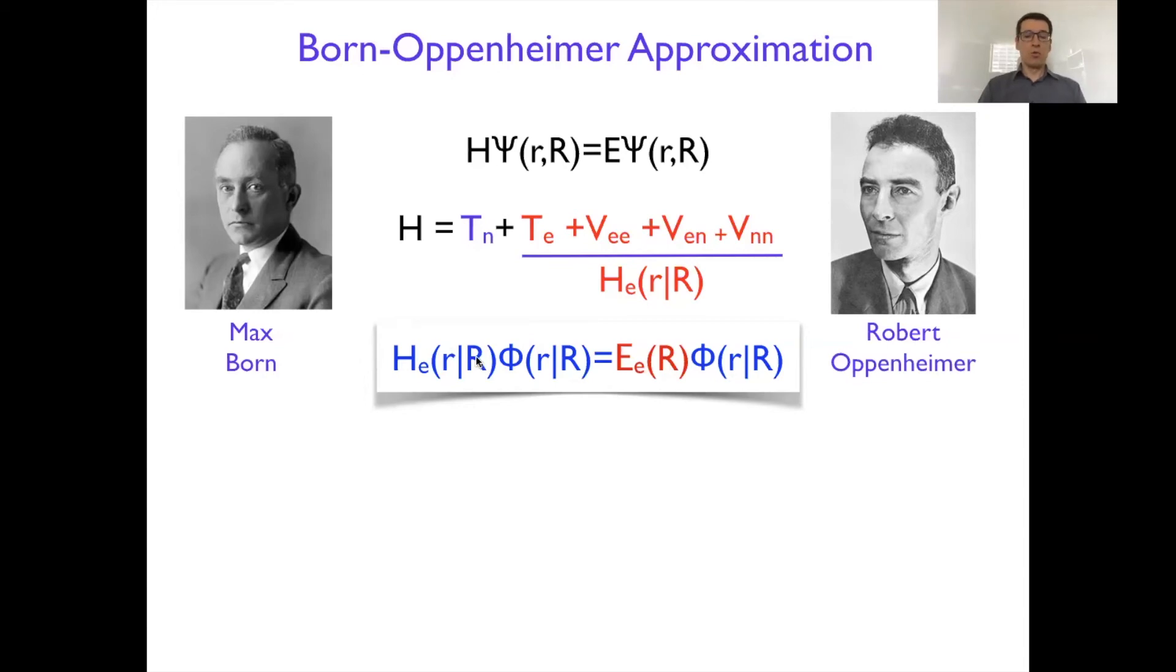The nuclei are frozen in some configuration, and depending on that configuration, the eigenvalues of this problem will be different. And the nice thing about this sometimes called Born-Oppenheimer approximation is that once you solve this electronic structure problem, you can go back and solve the total problem.